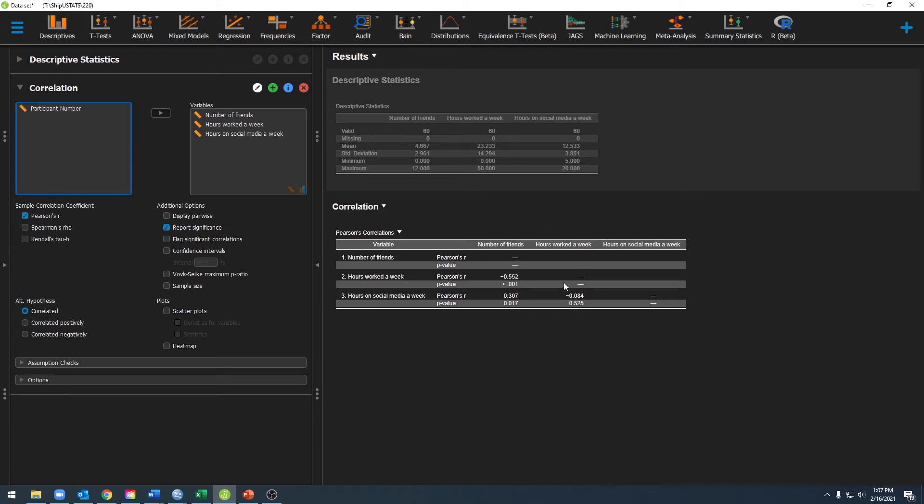Now that we have these results, you can see that we have our Pearson's correlation and the corresponding p-value for the correlations between these different variables. A correlation table functions as a grid, so you can easily identify that this correlation is between the number of friends and hours work per week. As you can see, I have a strong negative correlation between hours work per week and number of friends.